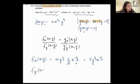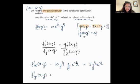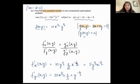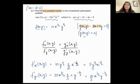Now for f prime y — partial derivative with respect to y, treating x as constant. So 10 stays, x raised to 1/2 stays, derivative of y raised to 1/3 gives 1/3 in front and y raised to minus 2/3, since 1/3 minus 1 equals minus 2/3. So f prime y equals (10/3) times x raised to 1/2 times y raised to minus 2/3.